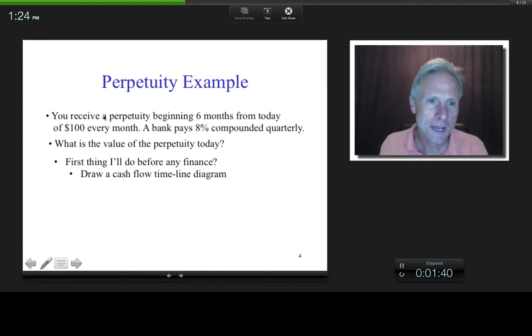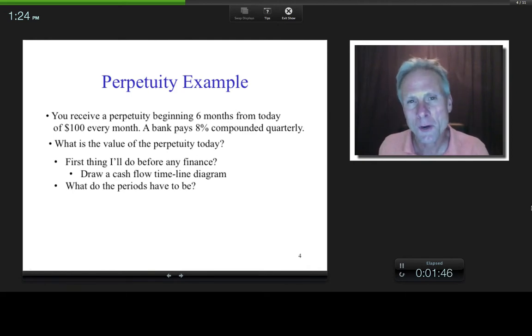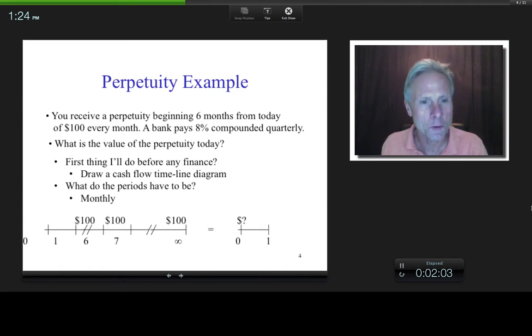So here we have a perpetuity six months from today, $100 every month. So when I draw this diagram, what do the periods have to be? When does some kind of action happen with the cash flows? Monthly, right? I give them every month. So I'm pretty much stuck with having them on a monthly basis. And so if I draw that...